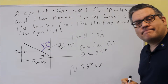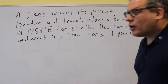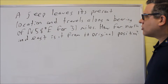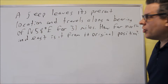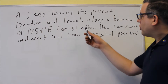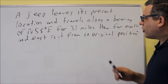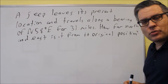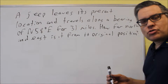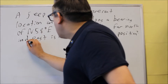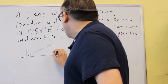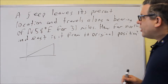Let's look at another one. This next problem also has to do with bearing. A jeep leaves its present location and travels along a bearing of north 58 degrees east for 31 miles. How far north and east is it from its original position? We definitely want to draw a triangle to see what's going on, so we're going to draw a right triangle.